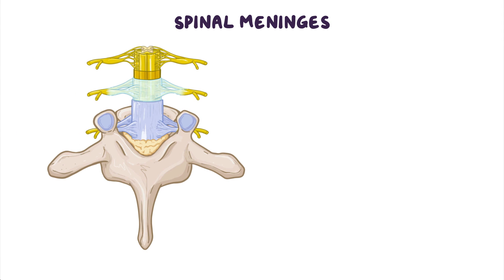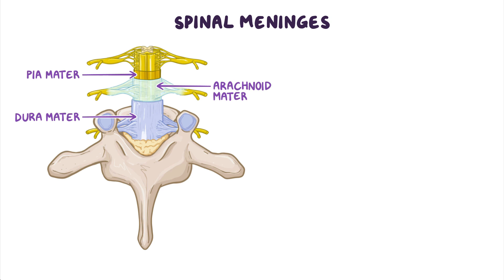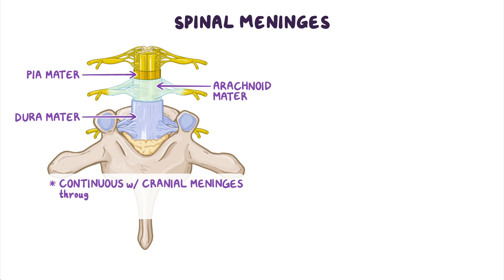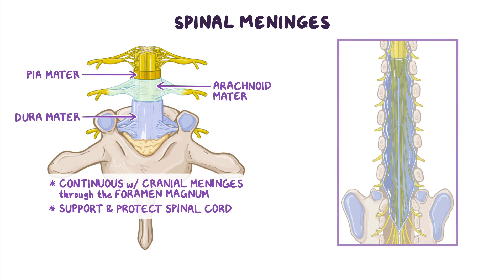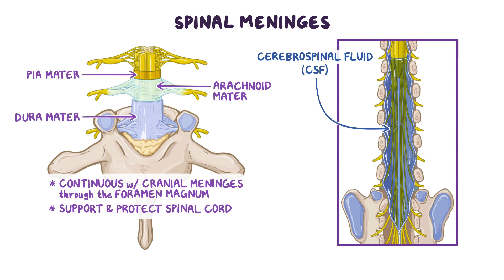The spinal cord and the spinal nerve roots are covered by three membranes collectively called the spinal meninges: the spinal dura mater, arachnoid mater, and pia mater. The spinal meninges are continuous with the cranial meninges through the foramen magnum, and they function to support and protect the spinal cord. They also contain the cerebrospinal fluid, or CSF, in which the spinal cord is suspended.